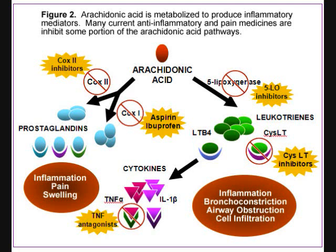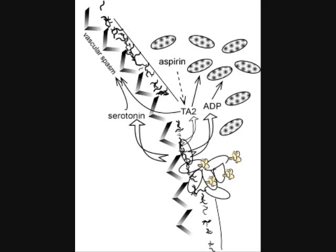Endothelium also has prothrombotic properties seen in endothelial injury. Exposure of subendothelial collagen and release of von Willebrand factor leads to platelet activation. Endothelial cells also produce tissue factor, which then activates the extrinsic coagulation sequence. Interleukin-1, TNF, and bacterial endotoxins cause endothelial cells to produce tissue factors.